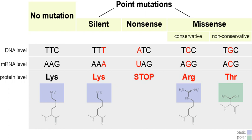Because RIP is so efficient at detecting and mutating repeats, fungal biologists often use it as a tool for mutagenesis. A second copy of a single-copy gene is first transformed into the genome, and the fungus must then mate and go through its sexual cycle to activate the RIP machinery. Many different mutations within the duplicated gene are obtained from even a single fertilization event, so that inactivated alleles — usually due to nonsense mutations — as well as alleles containing missense mutations can be obtained.